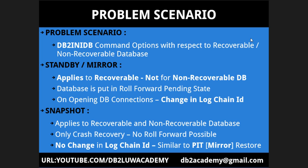The log chain ID change is significant — after you open the database and new log files are generated, you cannot take those log files back and put them in the source system to roll forward. That's not going to work. The third option is snapshot, which applies to both recoverable and non-recoverable databases. The key difference is it will not put the database in a roll-forward pending state — it directly opens the database after performing crash recovery.